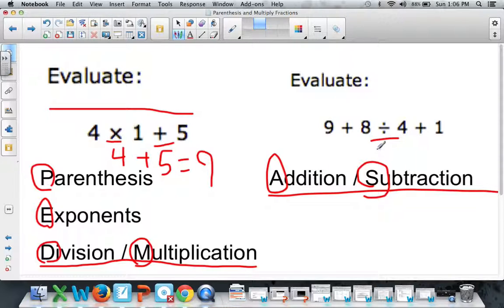8 divided by 4 equals 2. We still have that 9 plus, and we still have that plus 1 at the end. You can't forget those pieces. If we add them all together, 9 plus 2 is 11, plus 1, that gets you 12. If you do things in the wrong order, you could very easily get the wrong answer. So, the order is important.